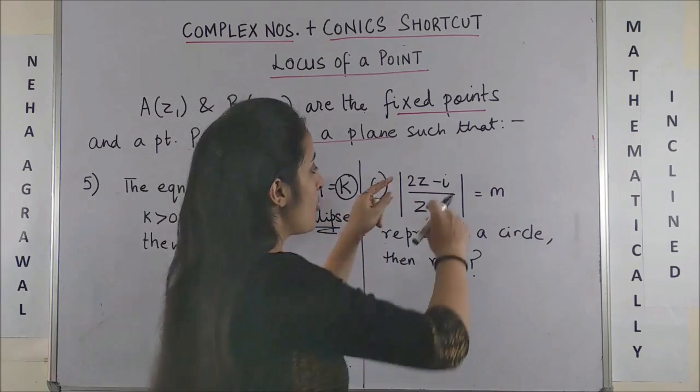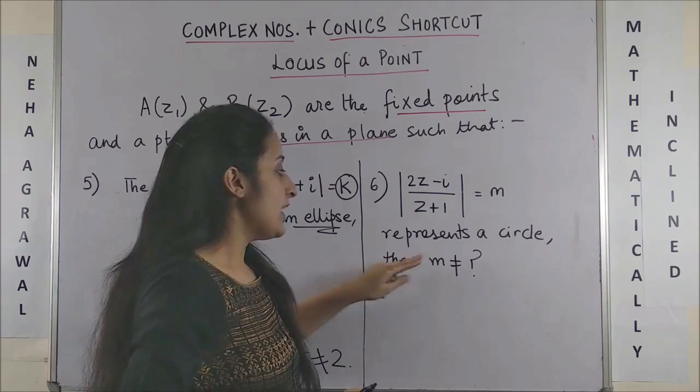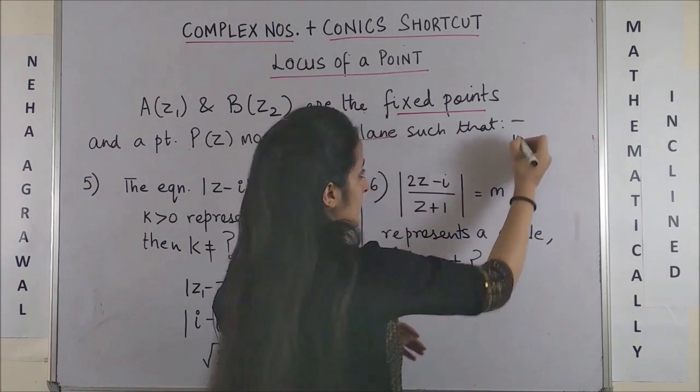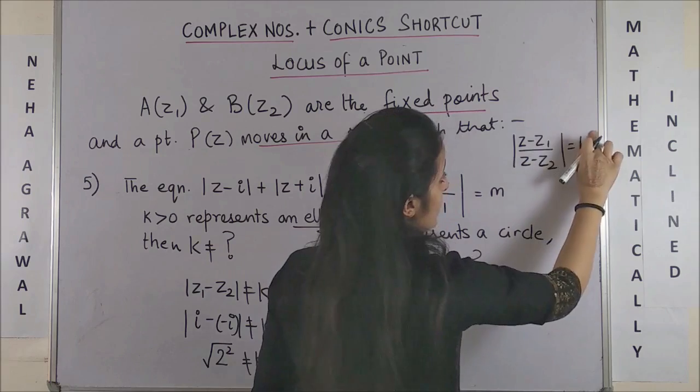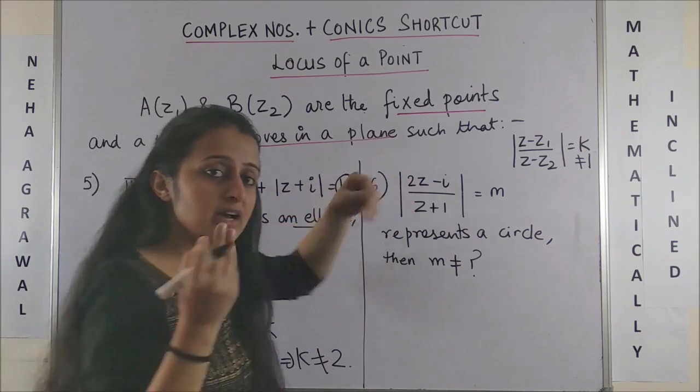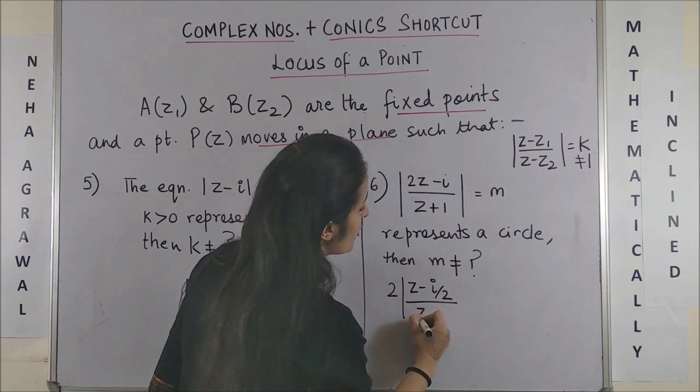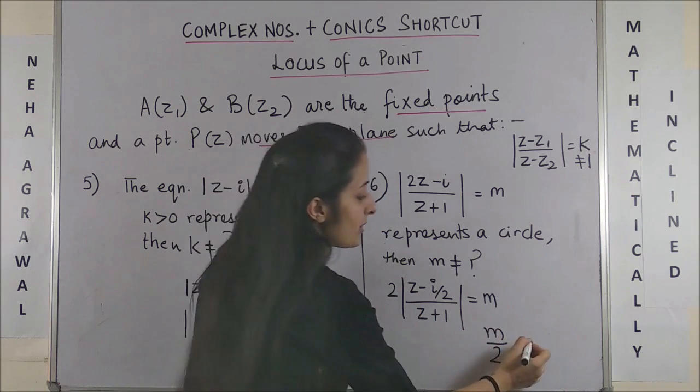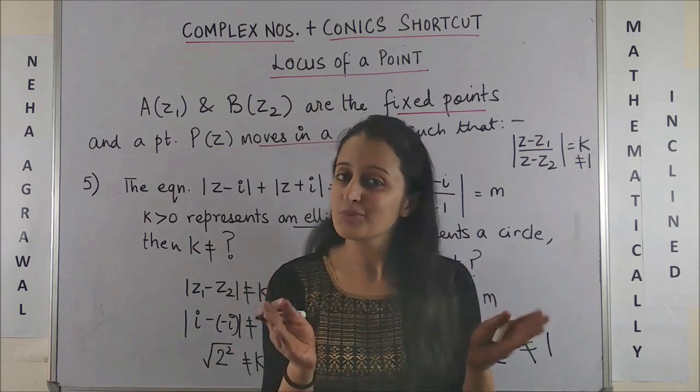Same way, looking at this question, you are given that |2z-i|/|z+1| = M, then it represents a circle. Then M should not be equal to what? If you recollect the standard form of a circle, it was |z-z₁|/|z-z₂| = K where K should not be equal to 1, right? But here it is 2z. However, here it is twice of Z, so first I have to bring this 2 outside. This becomes 2·|z-i/2|/|z+1| = M. In short, if I take this M to the other side, it becomes M/2. In short, my M/2 should not be equal to 1, or in other words, M is not equal to 2. Wasn't this super quick? Have a look.